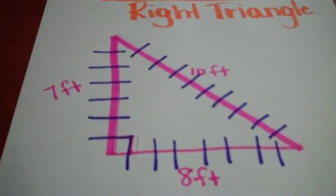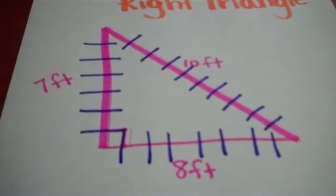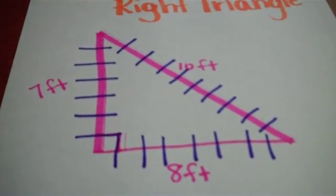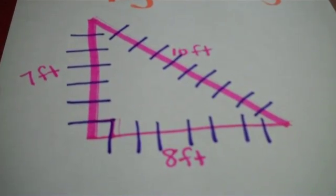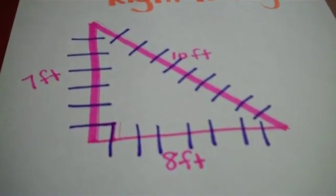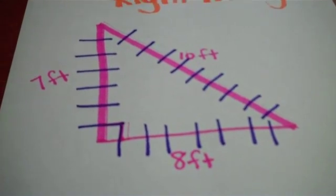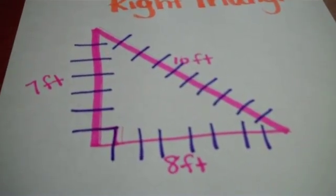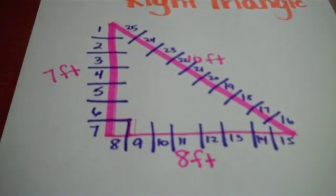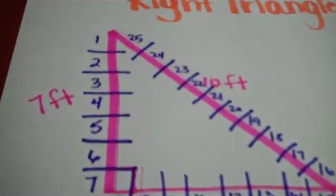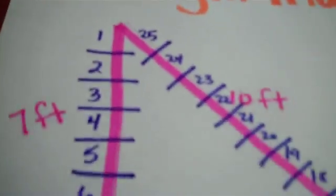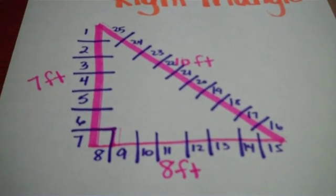All of my sides are now divided into the appropriate number of pieces. Now what I'm going to do is move around my shape and number each individual piece with its own number starting with 1 and ending when I get back to 1 on the other side. When I'm finished it will look like this. You can see that I've numbered all of my individual pieces with a different number in numerical order starting at 1. You can also see that my highest number is 25. That means that the perimeter of this shape is 25 feet.